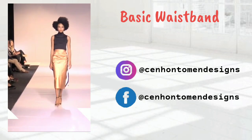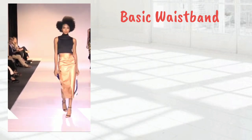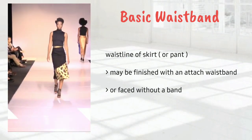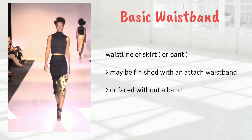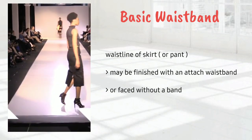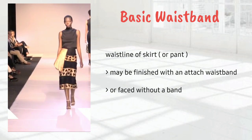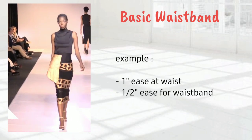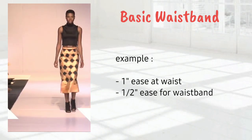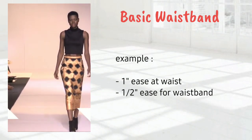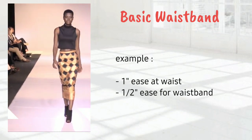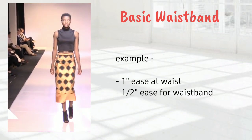The waistline of a skirt or pants may be finished with an attached waistband or faced without the band. An attached waistband should be larger than the true waistline measurement to compensate for thickness, the darts, and seam allowances stitched into the band. The ease allowance varies, but generally one half the ease allowed for waistline — for example, one inch ease at waist and one half inch ease for waistband — is added to the waistband length.